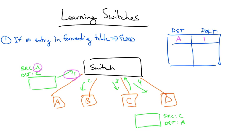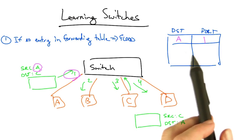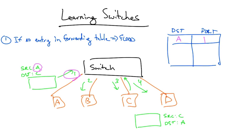So for example, when C replies with a frame destined for A, the switch now has an entry that tells it that it doesn't need to flood that packet, but instead can simply send the packet directly to the output port.